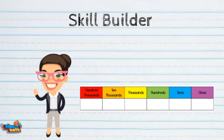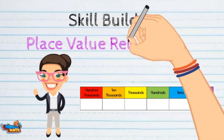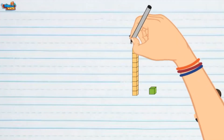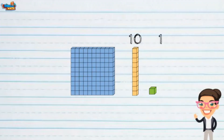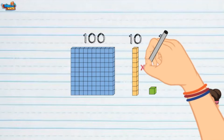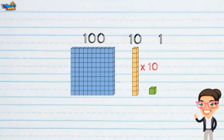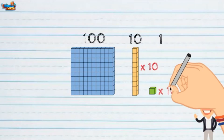Welcome to today's skill builder exploring place value relationships. Place value can be represented by base-10 blocks. The ones place is represented by a cube. 10 of the cubes put together is a group of 10. When 10 of the groups of 10 are put together, they make a group of 100. 10 groups of 10 equals 100.